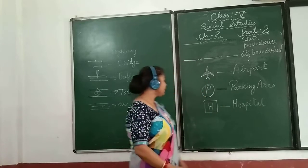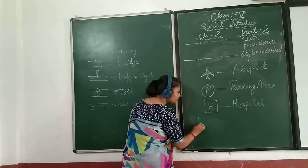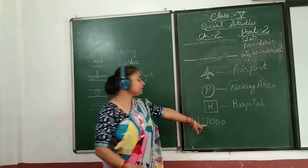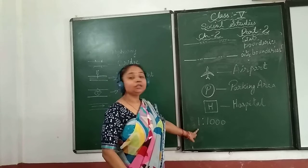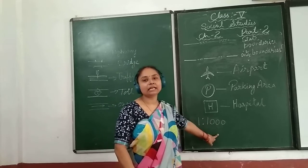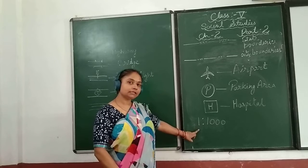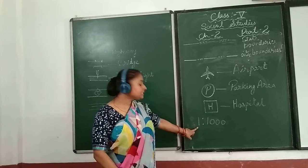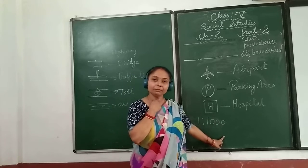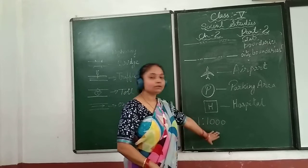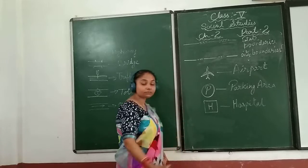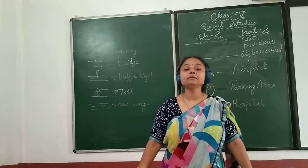For example, if someone has given a map with a scale of 1 to 1000, that means 1 unit on the map denotes 1000 units in reality. For example, 1 centimeter on the map denotes 1000 meters in the real world. For this purpose, we use scaling.